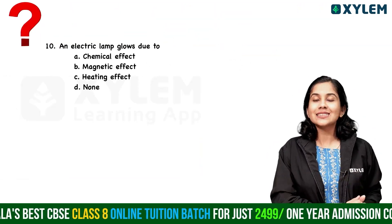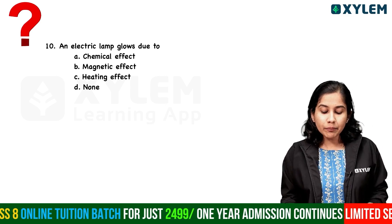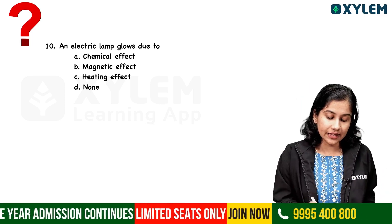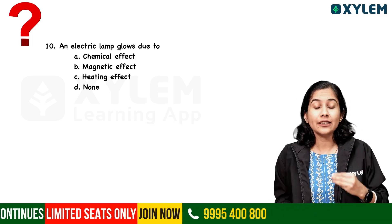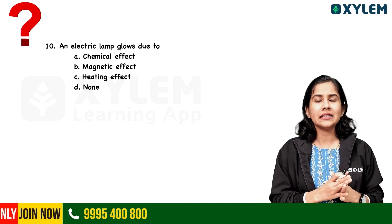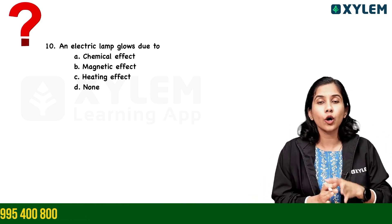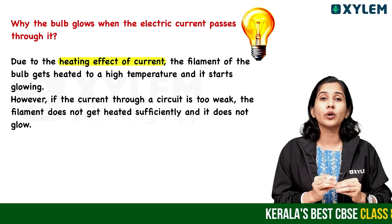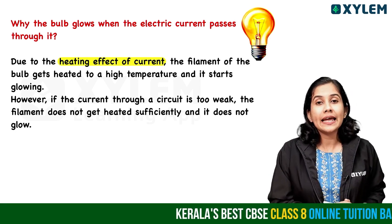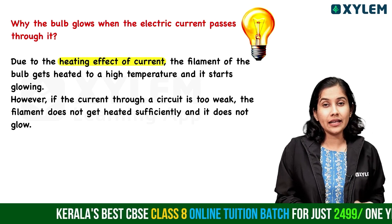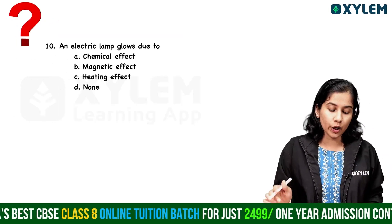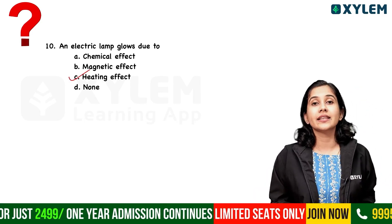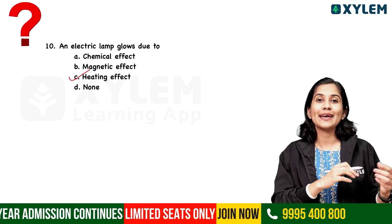Last, the tenth question: An electric lamp glows due to — chemical effect, magnetic effect, heating effect, or none? Although we are learning about the chemical effect of electric current in this chapter, an electric lamp glows due to the heating effect. The current heats the filament to a high temperature, causing it to glow. So the answer is heating effect.